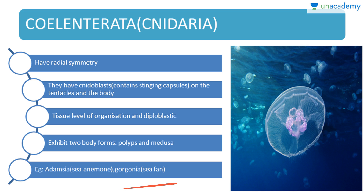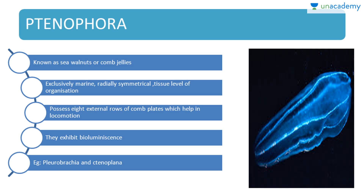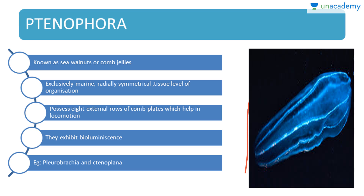Next is Ctenophora, also known as sea walnuts or comb jellies. They are exclusively marine, radially symmetrical, with tissue level of organization. They possess eight external rows of comb plates for locomotion. An interesting property is bioluminescence — the ability of living organisms to emit light. Examples: Pleurobrachia and Beroe. Always remember at least two examples per phylum.